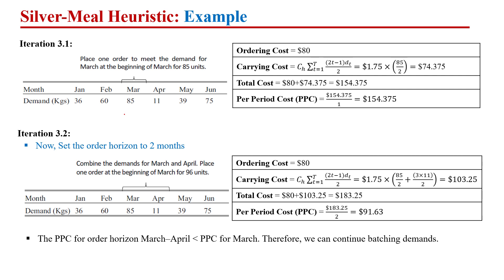Now iteration three. Considering only the first month — March as the planning horizon of one — we compute the per period cost. Then considering a two-month planning horizon, which is March and April, the per period cost comes out to $91.63. Since $91.63 is smaller than the one-period cost, we need to check the three-month planning horizon as well.